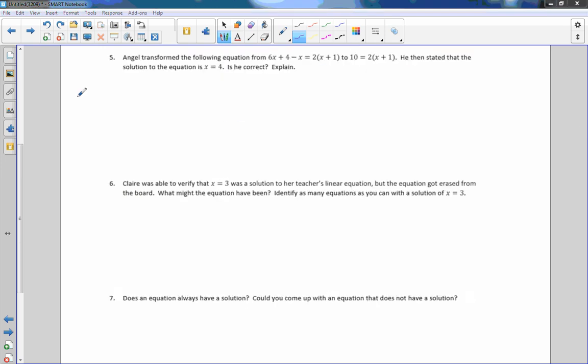Number 5 says, Angela transformed the following equation from 6x plus 4 minus x equals 2 times the quantity x plus 1 to 10 equals the quantity, or 2 times the quantity x plus 1. He then stated that the solution to the equation is x plus 4. Is he correct? Well, here's what we need to do. First of all, he converted this here to this. The first thing I guess I would do is check to see if he did that correctly.